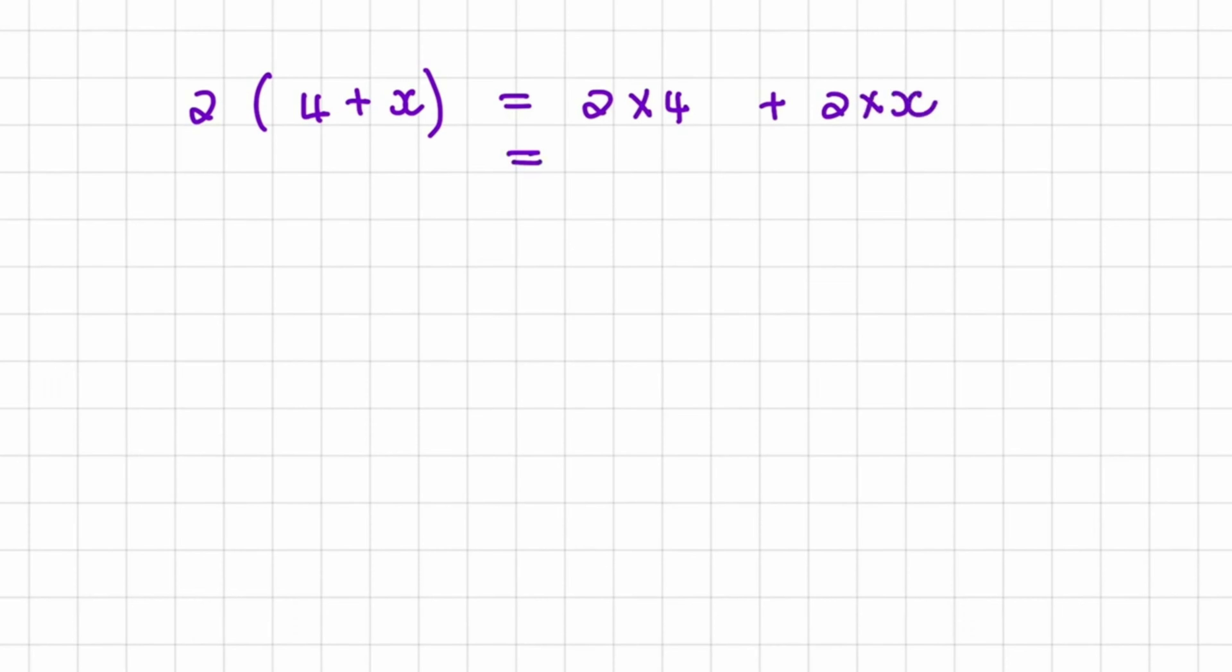And that result would be 8 plus 2 multiplied with the unknown number. How about if we have 3 values that we don't know?